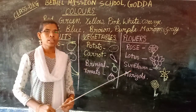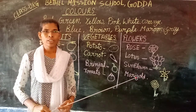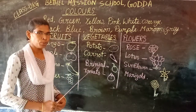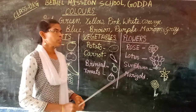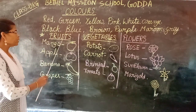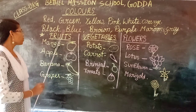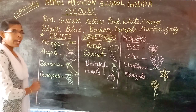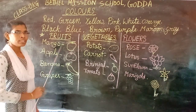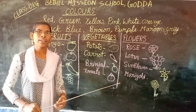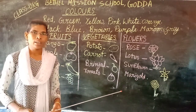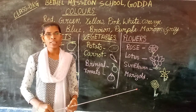Now we will learn the colors of different things like vegetables, fruits and flowers. In fruits: Mango. M-A-N-G-O. Mango. Mango has yellow and green colors. When it is raw, it looks green, and when it is ripened, it looks yellow.